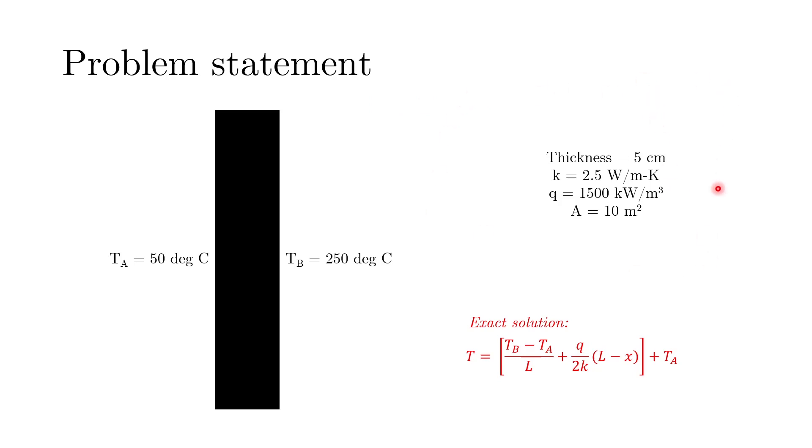Some of the properties that I'm taking for the demonstration: the thickness is 5 centimeter, the thermal conductivity is 2.5 watt per meter kelvin, and the wall is generating a heat of 1500 kilowatt per meter cube, and the cross-sectional area is 10 meter square. You can see that the cross-sectional area is much larger as compared to the thickness of the wall. So the heat transfer could be modeled by a one-dimensional process that is going normal to the wall and here we have TA and TB as the boundary temperatures.